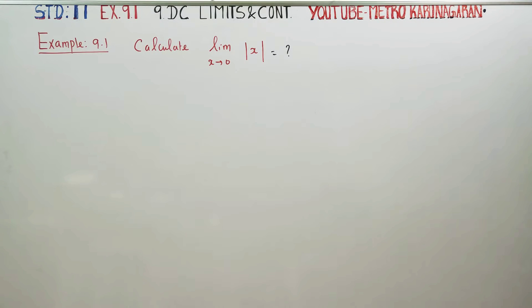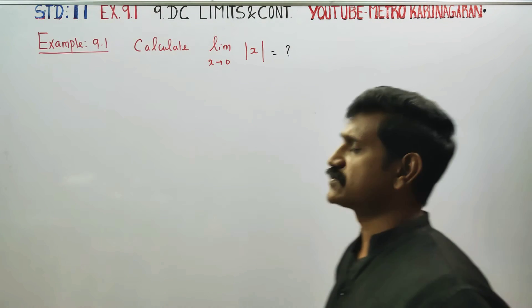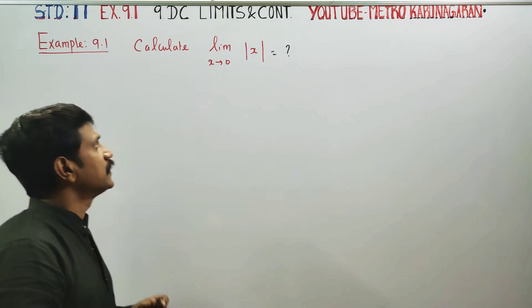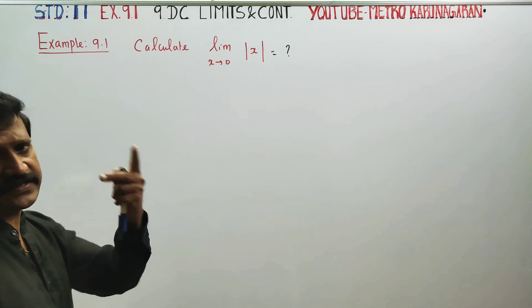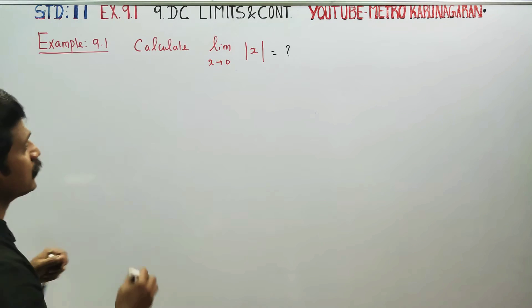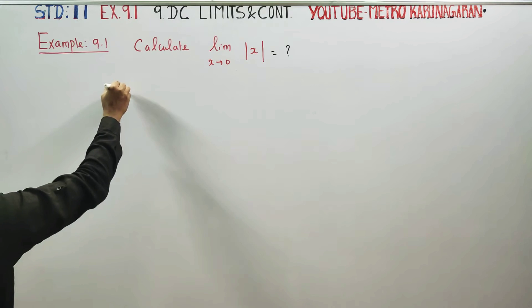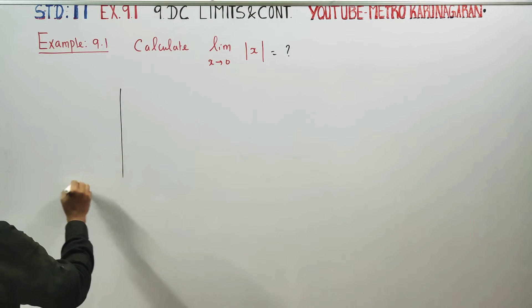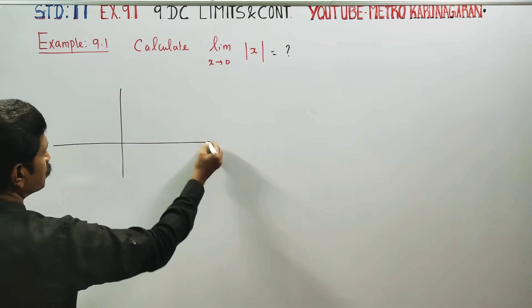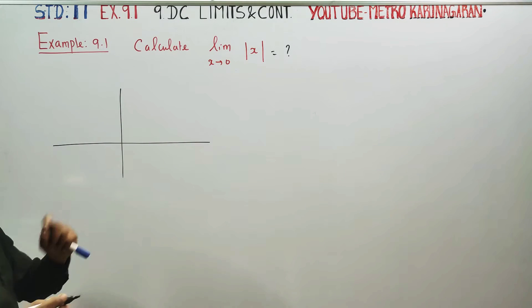Hello, 11th Standard Students. In Example 9.1, calculate the limit as X turns to 0 of modulus of X. There are 2 more steps and questions. If you have done this complicated example, you will be able to do the next questions.